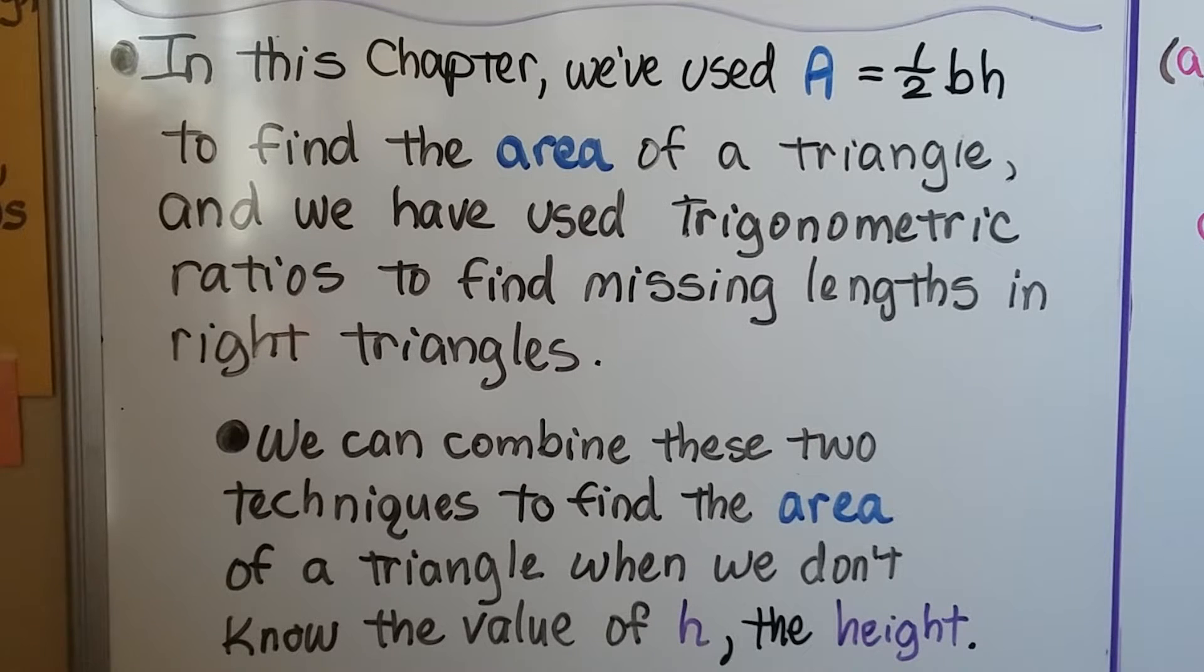In this chapter, we've used A = 1/2bh to find the area of a triangle, and we've used trigonometric ratios to find missing lengths in right triangles. We can combine these two techniques to find the area of a triangle when we don't know the value of h, the height.